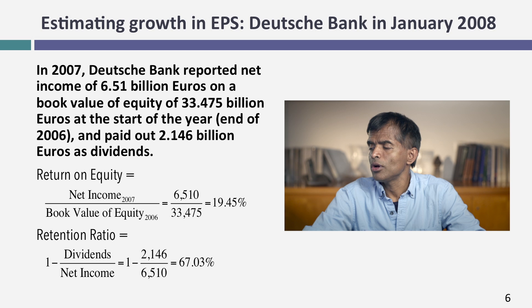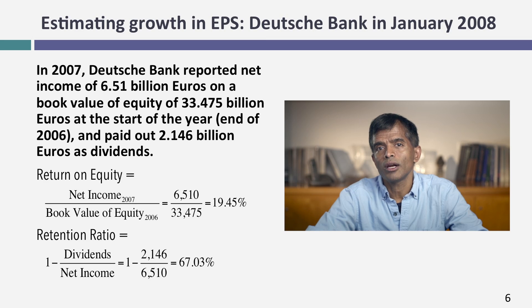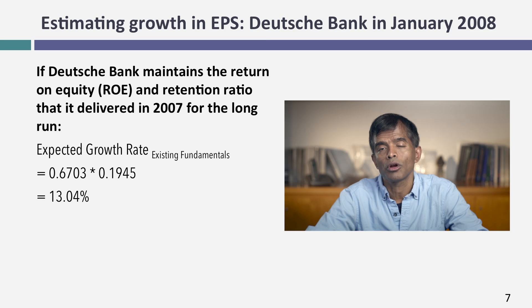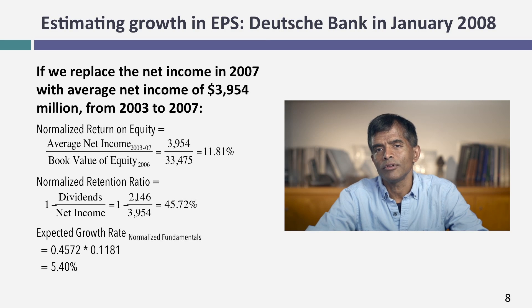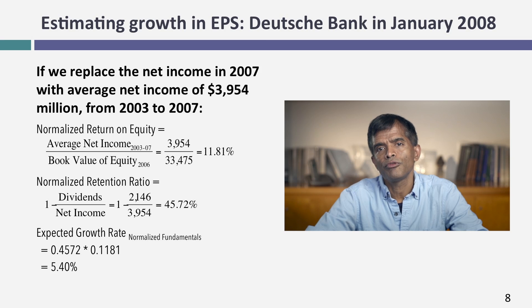Let's try this with Deutsche Bank in 2008. The retention ratio I computed was about 67% and the return on equity was 19.45% — a remarkably high return on equity for large banks. That's what worried me, because 2007 was a very good year for banks, and using those numbers would probably overestimate the growth rate at 13.04%. Instead, I looked at a five-year average, which gave a return on equity of 11.81% and a retention ratio of 45.72%, producing an expected growth rate of 5.4%, which strikes me as a more reasonable forward-looking number.